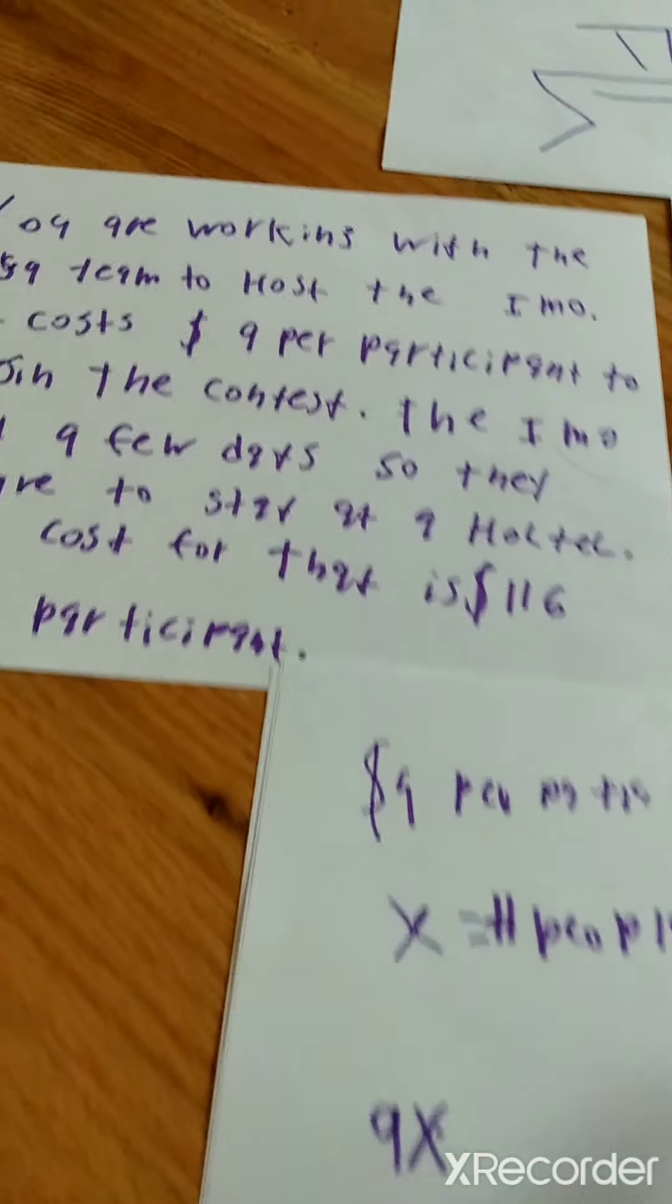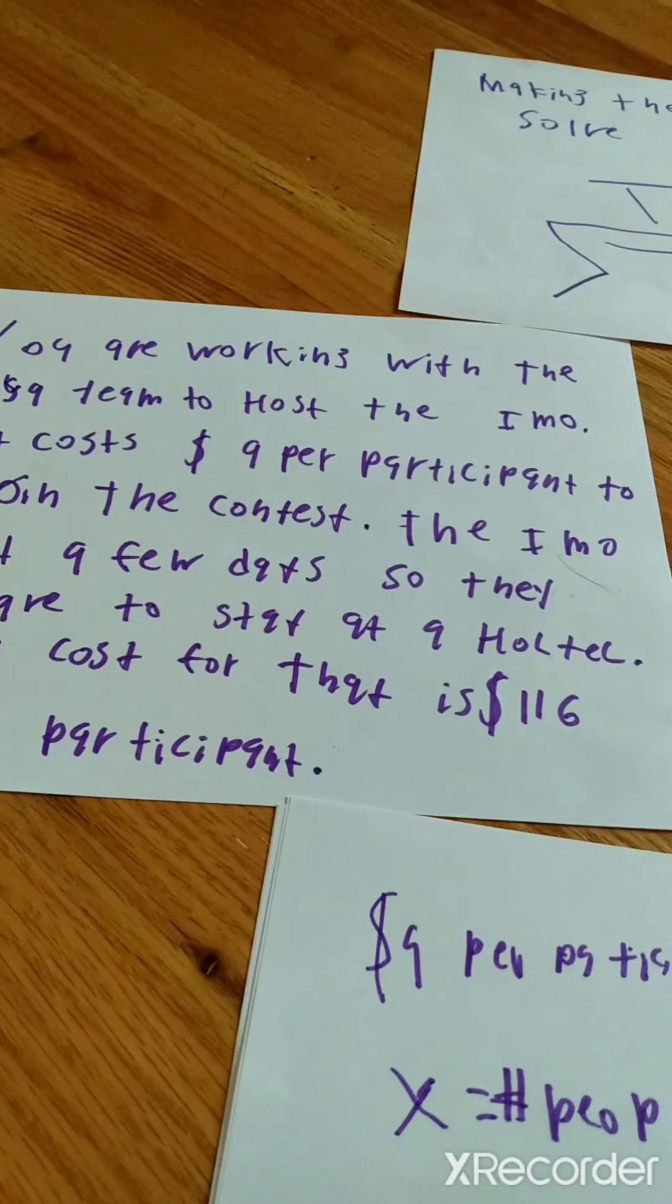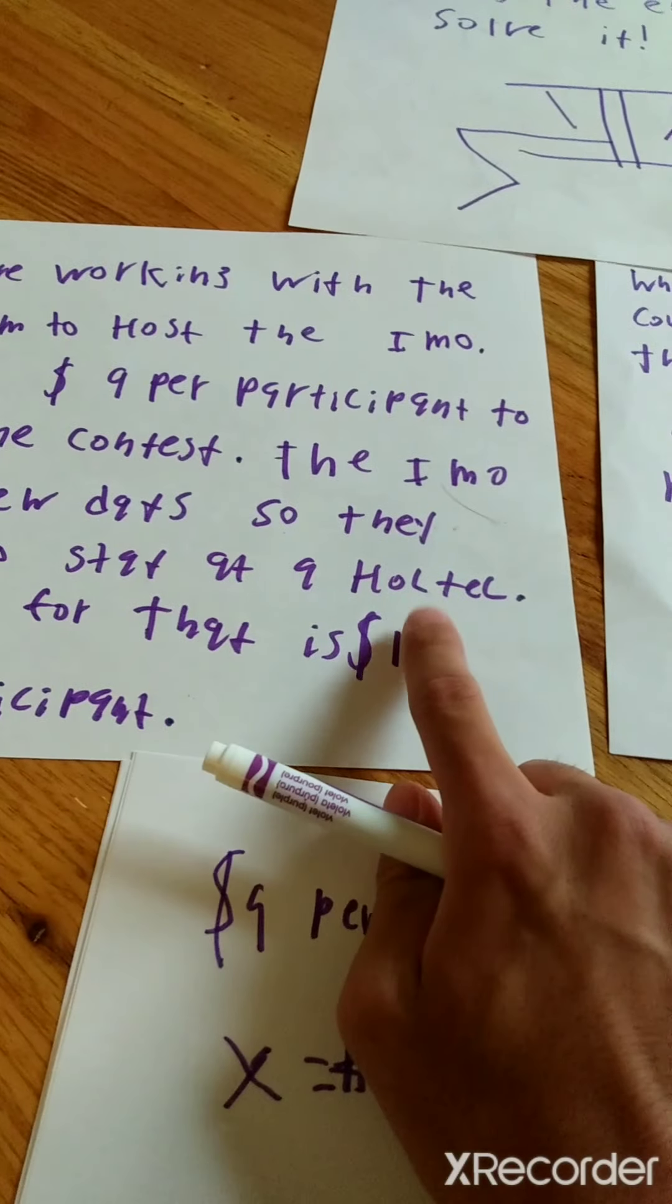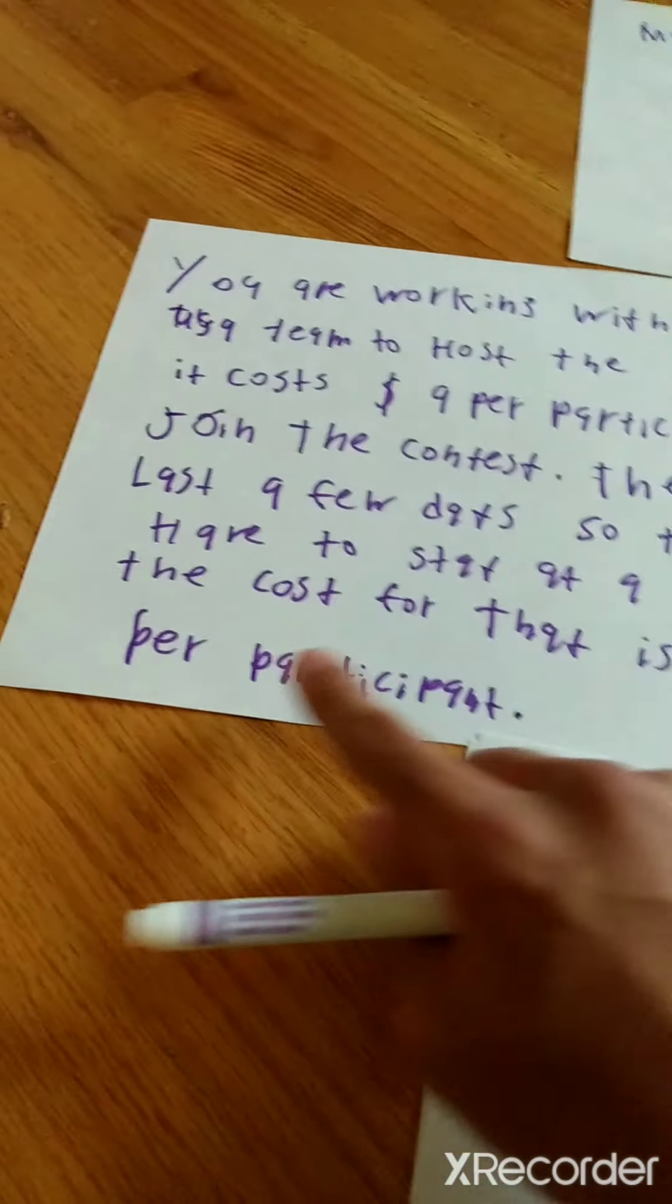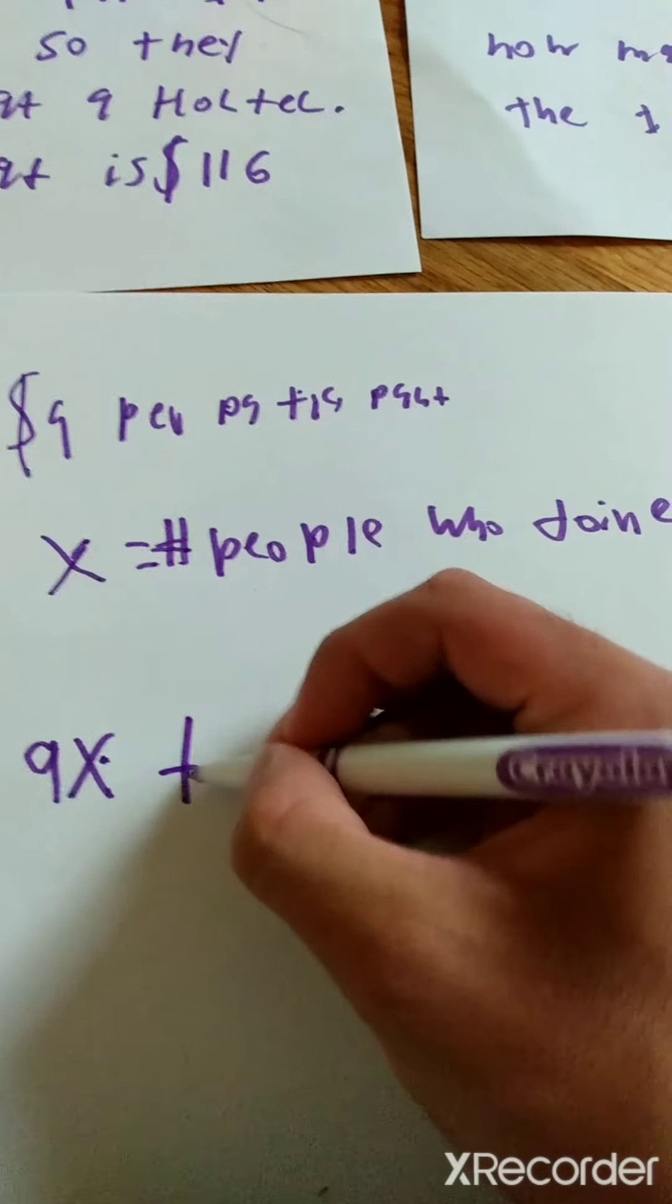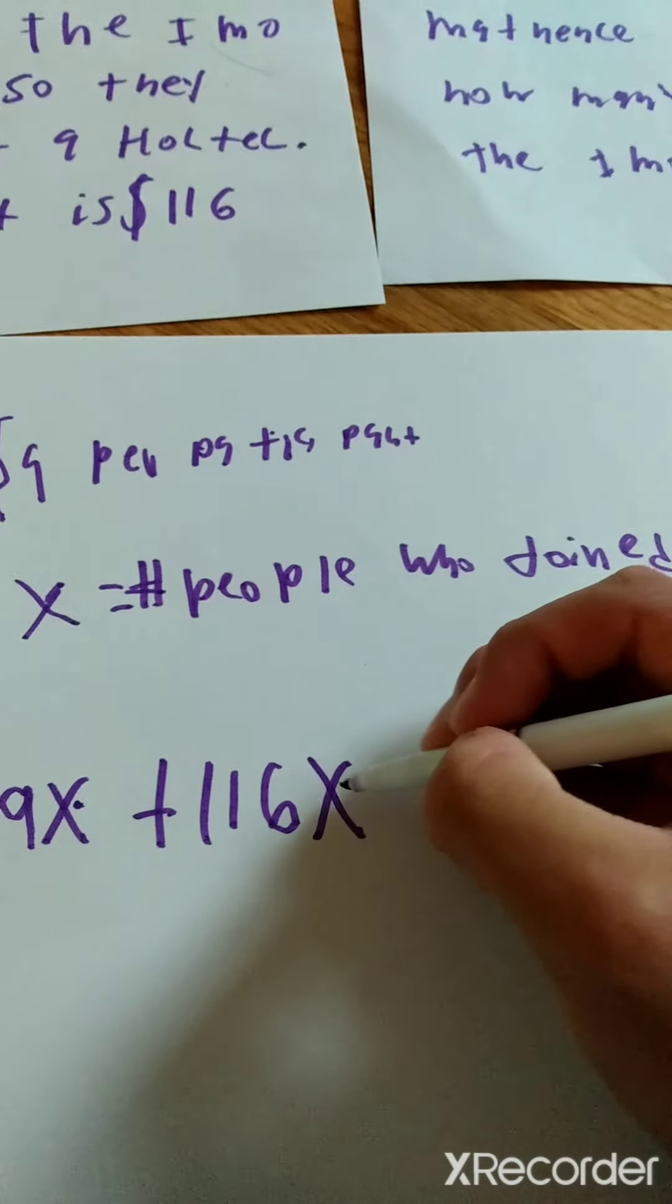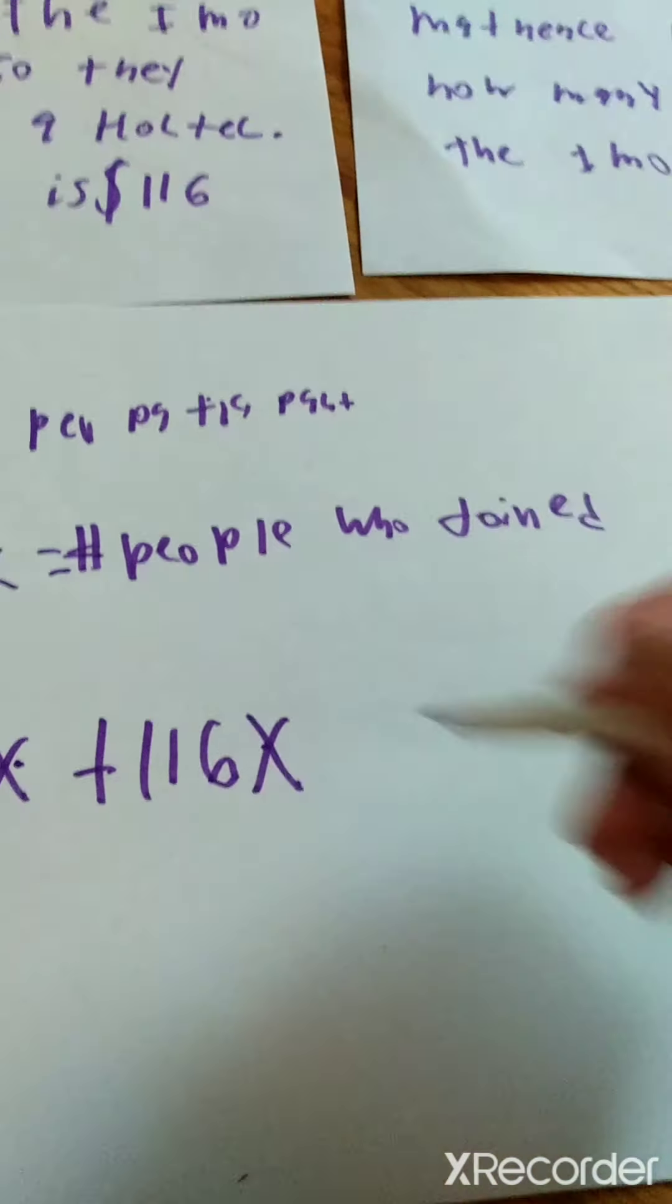But since it's in another country, the IMO is in a different country, other people that are not from the USA, that are from different countries, they will have to stay in the hotel. So pretty much that is $116 per participant. So then we have to add that by 116X. Each person staying at the hotel must pay $116 for the hotel.